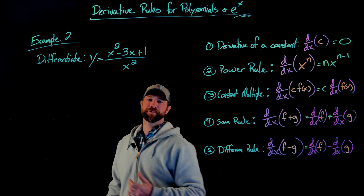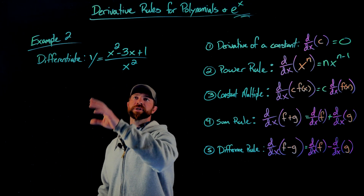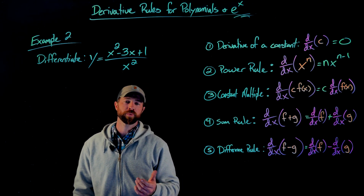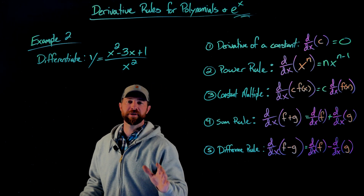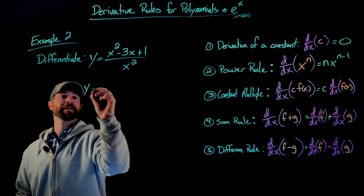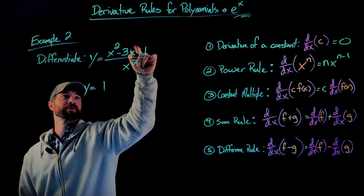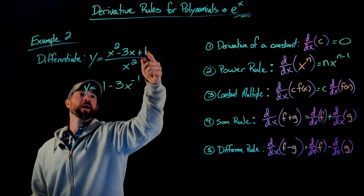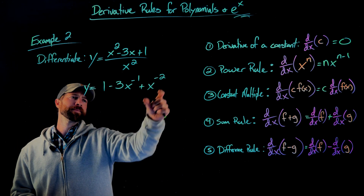In our second example, we're asked to differentiate a rational function. You might think we can differentiate the numerator and denominator separately and take the quotient — but we can't, and you'll see the quotient rule is more complicated. Instead, we use algebra: distribute the division by x squared to each term. x squared over x squared is 1; negative 3x over x squared becomes negative 3x to the negative 1; and 1 over x squared becomes x to the negative 2.